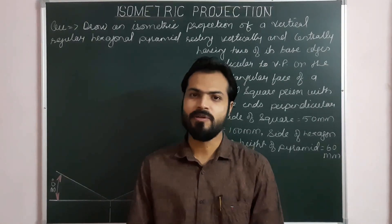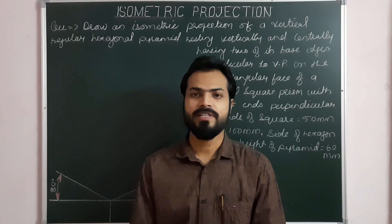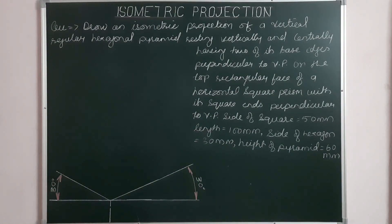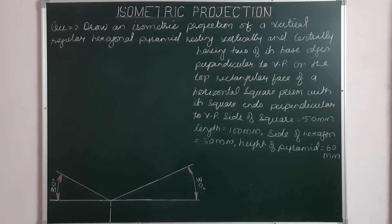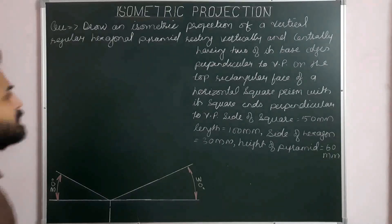Until now we have discussed combinations of solids having a common vertical axis. Now let's see problems where the axes intersect each other. The problem: draw an isometric projection of a vertical regular hexagonal pyramid resting vertically and centrally, having two of its base edges perpendicular to VP, on the top rectangular face of a horizontal square prism with its square ends perpendicular to VP. Side of square is 50 mm, length of square prism is 100 mm, side of hexagonal pyramid is 30 mm, and height of pyramid is 60 mm.